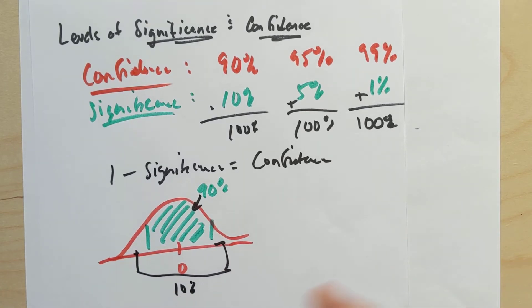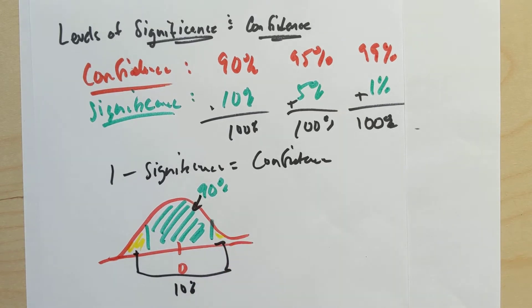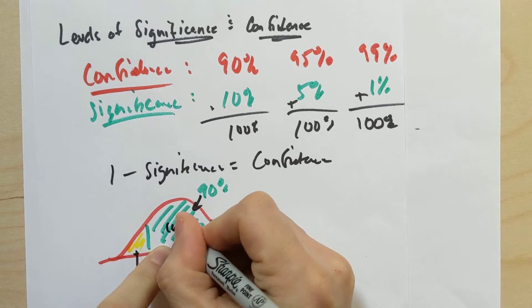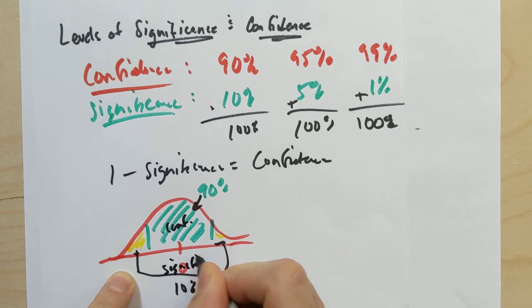And the key idea is that this, these little tails now, right, could be considered connected to a particular level of significance. This guy in the middle part, this has to do with a level of confidence. These two little tail parts have to do with a level of significance.